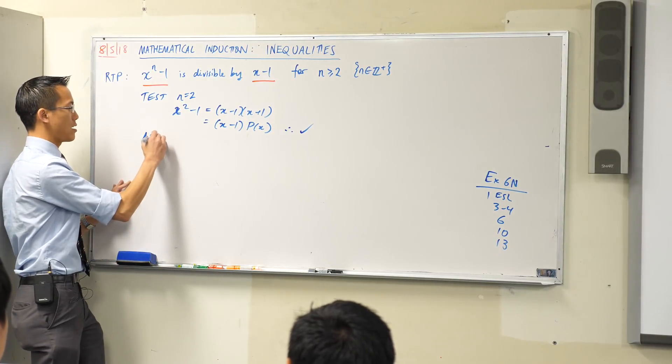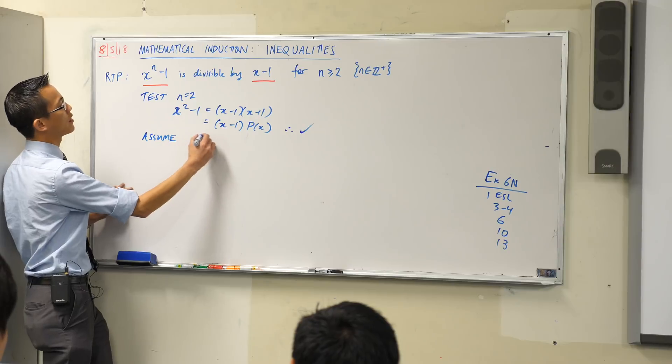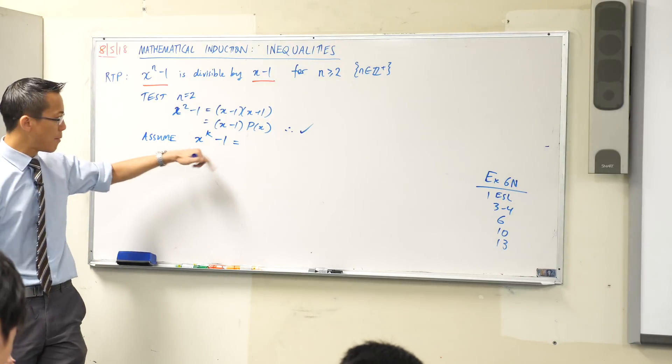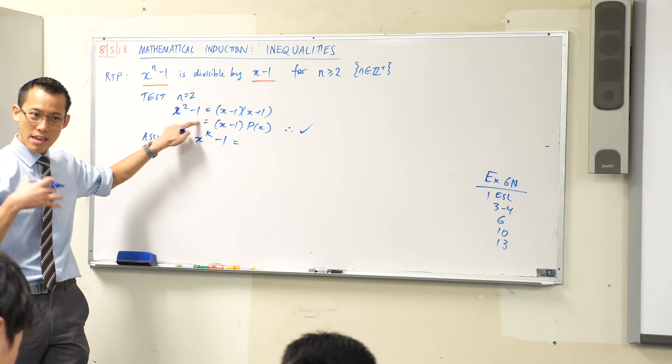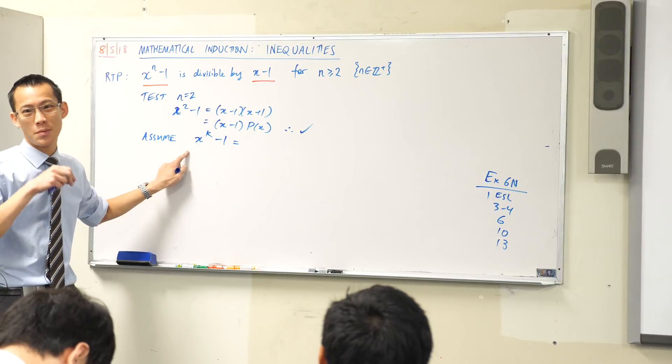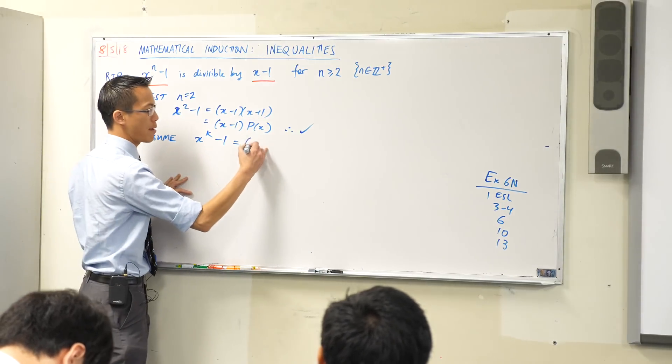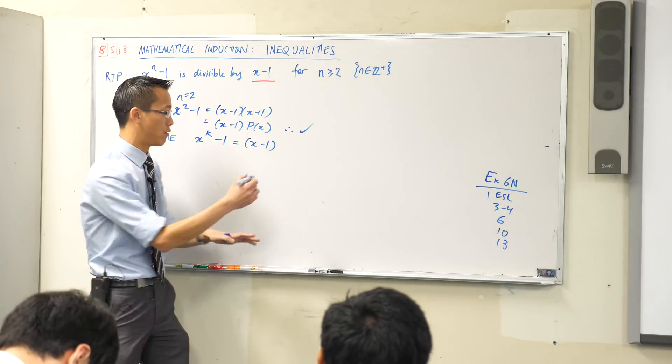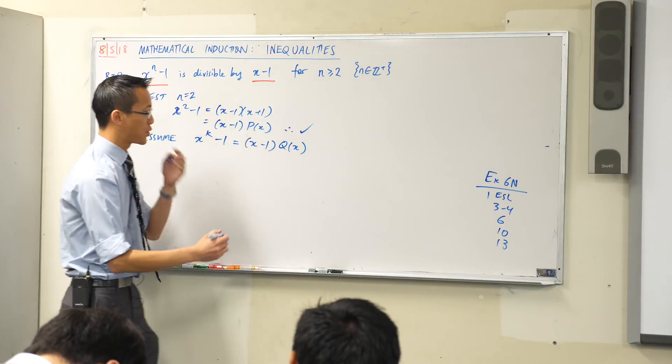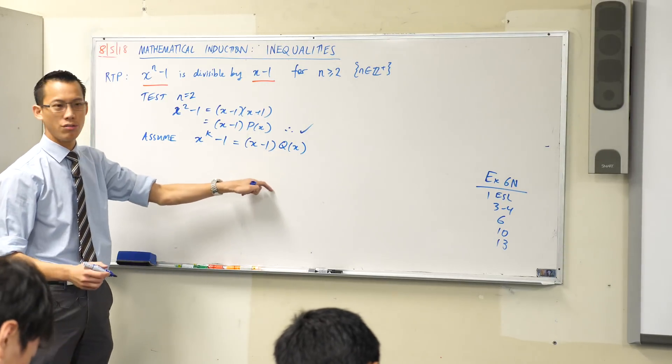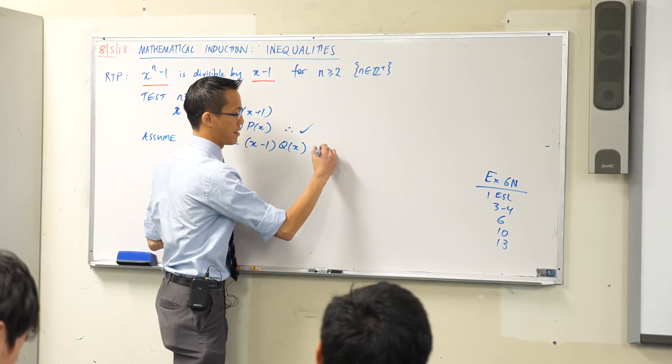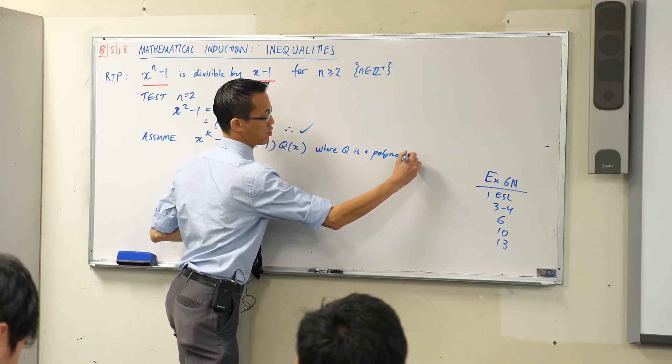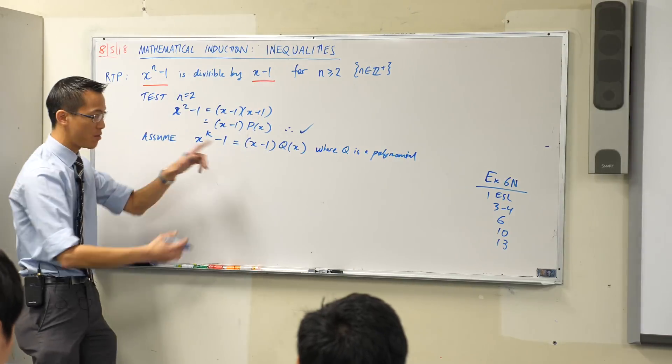This thing over here is a factor and so even though it's not a number like in numerical divisibility that's it. I can say this guy is divisible by x minus 1. I can make it super clear by saying look it's x minus 1 times some other polynomial. Do you remember this when we're doing factor theorem remainder theorem all that? So therefore I'm done. I'm now going to do the assumptions so it's going to be x to the k minus 1.